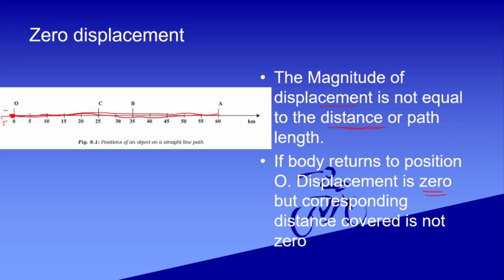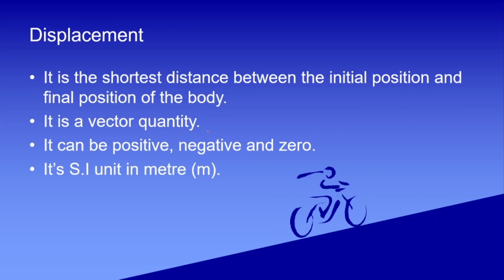And if the body went further in the other direction, it now has negative displacement — 5 km the other way, so displacement is minus 5. So displacement can be zero, positive, and negative. Displacement is either equal to distance or less than distance — it can never be greater than distance. Jab body usi seedhi disha mein chalti hai tab displacement equals distance. Its SI unit is also meter.